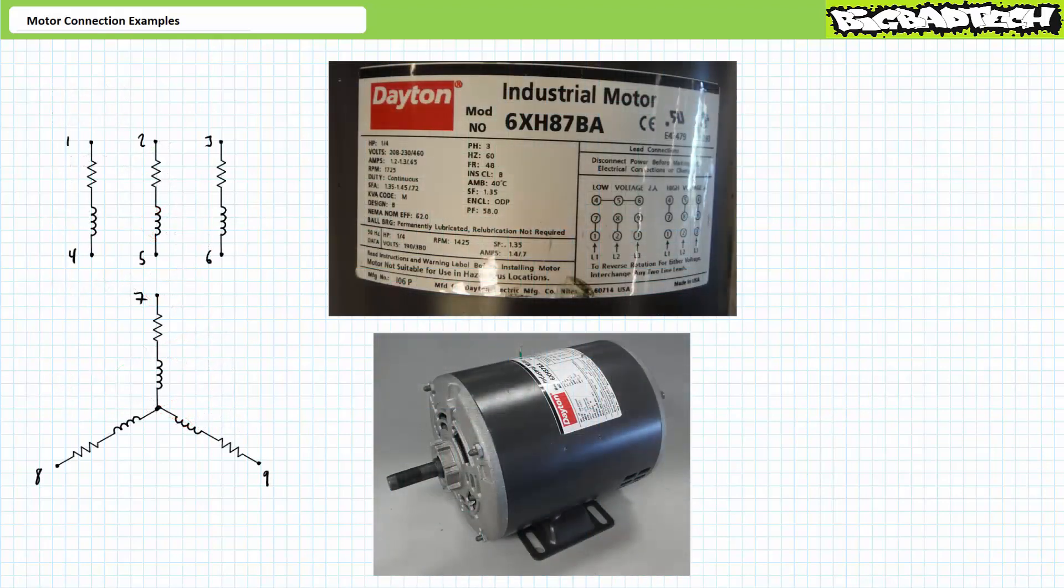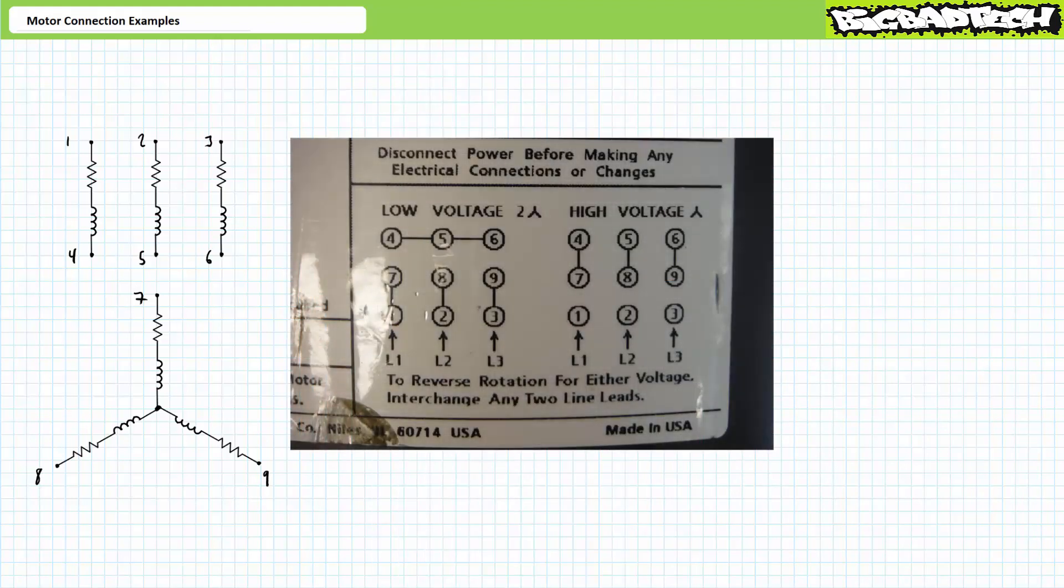First up is a quarter horsepower Dayton motor with the following motor nameplate information including a motor connection diagram on the right hand side. It looks like this is a nine-lead motor. Judging from the four-five-six connection in the low voltage configuration, this is most likely a nine-lead Y configured motor. Let's use an ohmmeter to verify this hypothesis.